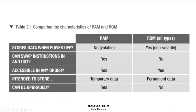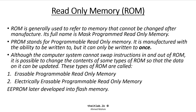From the textbook, here is the difference between RAM and ROM. RAM is volatile — it does not store data when power is off. However, ROM is non-volatile, so it stores data even without power. RAM can swap instructions in and out: when you open a program, instructions go into RAM; when you close it, they're removed. In ROM, there's no adding or removing programs — only BIOS is there, always. Both RAM and ROM can be accessed in any order.